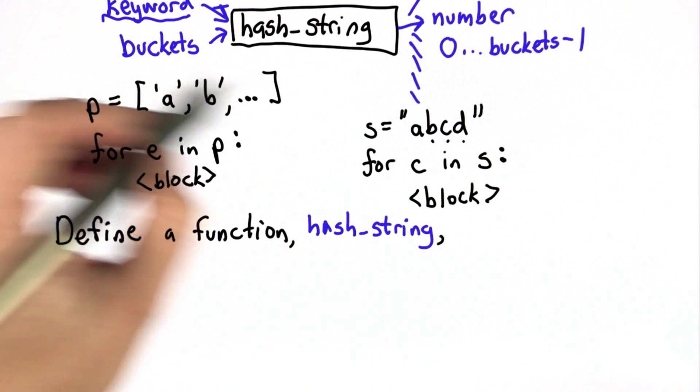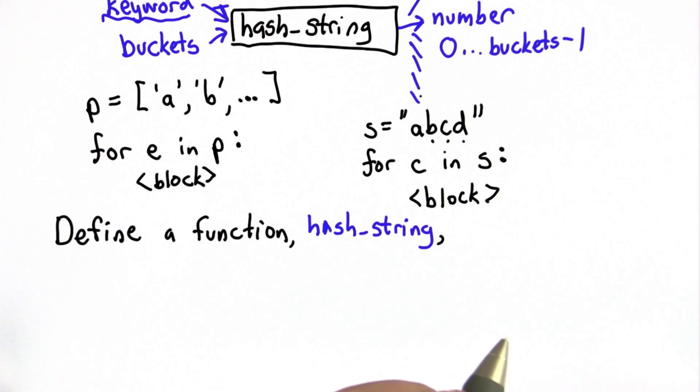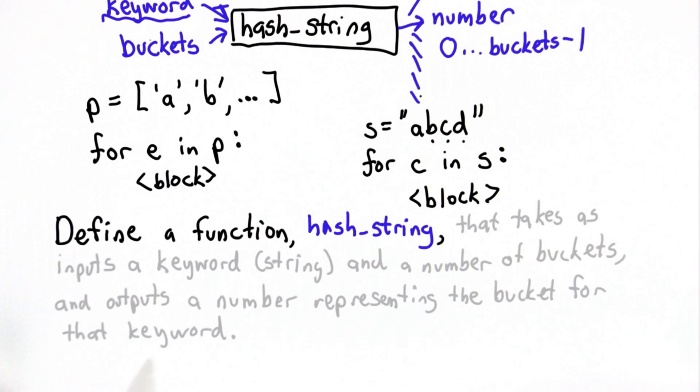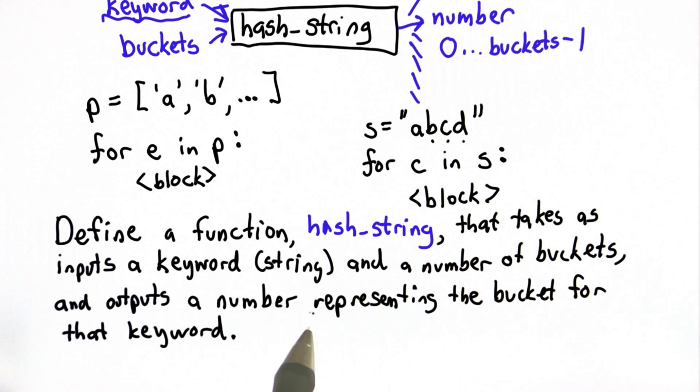It takes a keyword, a number of buckets, and it gives a number identifying the bucket where that keyword will belong. But instead of just using the first letter in the keyword, it's going to use all the letters and produces as output a single number that represents the bucket where that keyword belongs. Your goal is to do this in a way that depends on all the characters in the string, not just the first character.